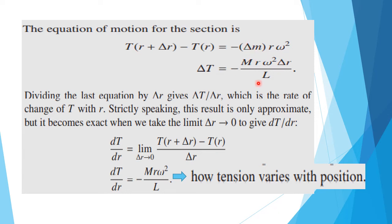Delta m equals m by l times delta r. Substituting, we get: delta T equals minus m·r·omega squared·delta r by l. Dividing by delta r, we get delta T by delta r. We want to find the rate of change of T with respect to r, so we apply the limit as delta r tends to 0 to give dT/dr.